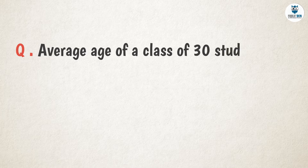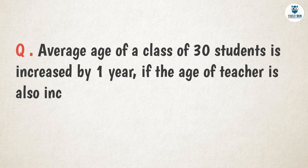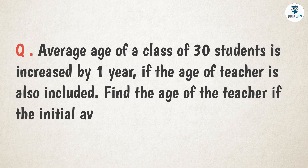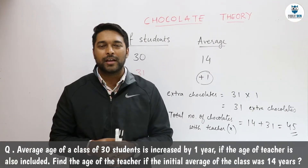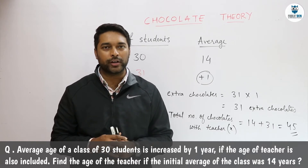Now let us move on to our next question, which says: the average age of a class of 30 students is increased by 1 year if the age of the teacher is also included. Find the age of the teacher if the initial average age of the class was 14 years. In this question we will consider age as chocolates.